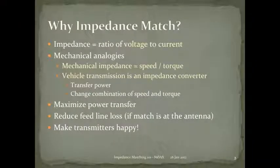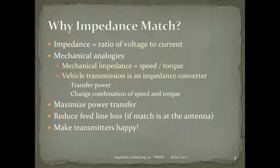Impedance is simply the ratio of voltage to current — how hard you're pushing versus how much action you get. There are many analogies to electrical impedance. In a mechanical rotating system, mechanical impedance is the ratio of speed to torque. Looking at a drive shaft coming out of a transmission going to the wheels gives you an idea of mechanical impedance.